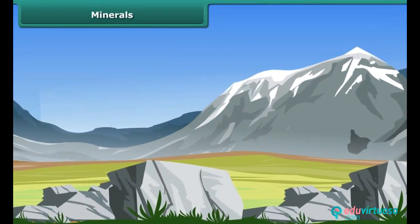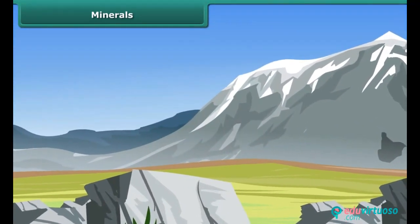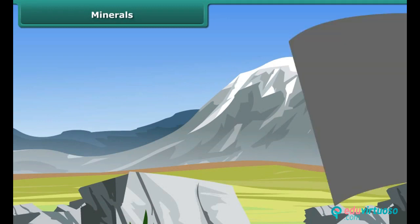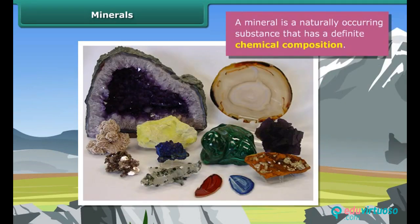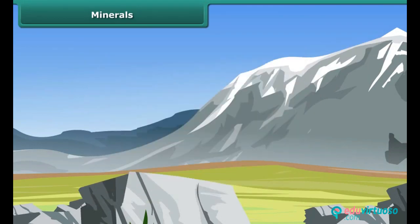Minerals are materials mixed in rocks on earth. They are formed by natural processes and found concentrated in a particular area. Different minerals have different chemical composition, color, density, hardness, and solubility. Based on their composition, minerals are classified mainly as metallic and non-metallic minerals.